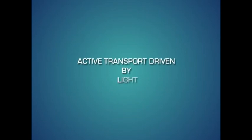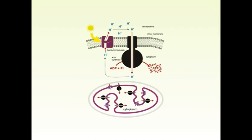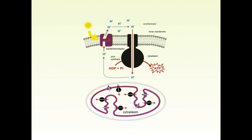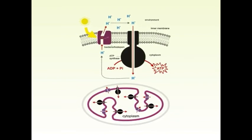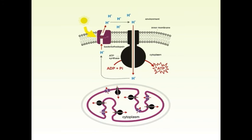Now let's look at active transport driven by light. In the plasma membrane of an archaebacterium, Halobacterium halobium, bacteriorhodopsin acts as a membrane transport protein. In the presence of sunlight, thousands of bacteriorhodopsin molecules pump hydrogen ions out of the cell, creating a hydrogen ion concentration gradient across the bacterial plasma membrane. This hydrogen ion gradient is used to generate ATP when the hydrogen ions flow back into the bacterium through a second membrane protein, ATP synthase, as shown in the following diagram.